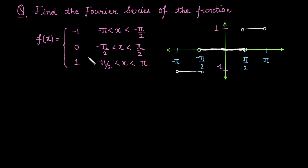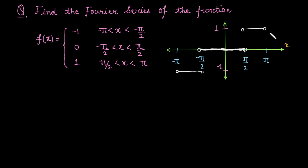For the first case, we are finding the Fourier series of this function. The graphical view is shown here. From minus pi to minus pi by 2, the function value is minus 1. From minus pi by 2 to pi by 2, the function value is 0. From pi by 2 to pi, the function value is 1. This is a piecewise defined function.